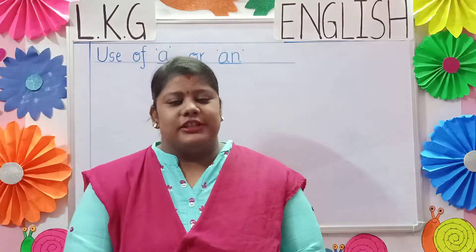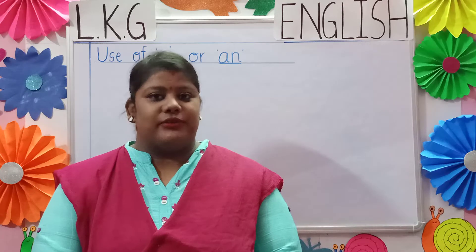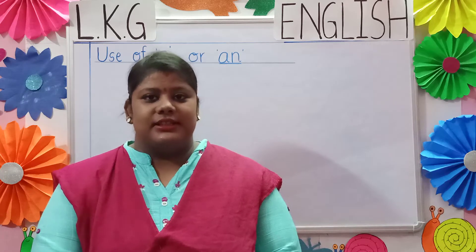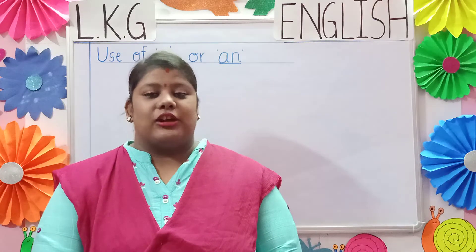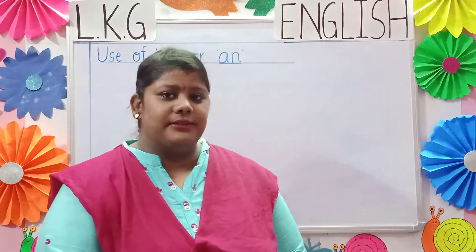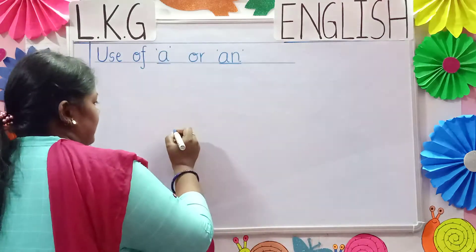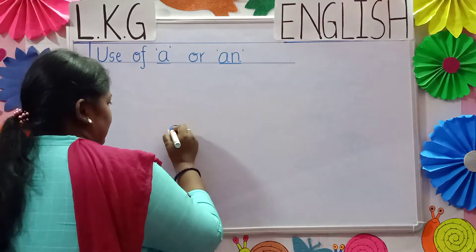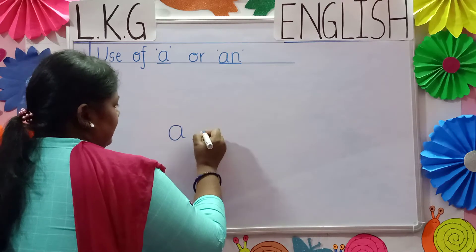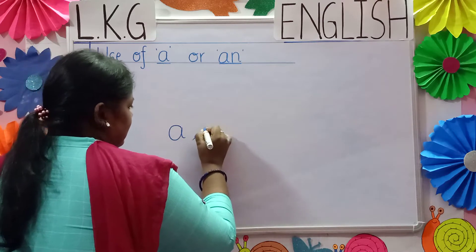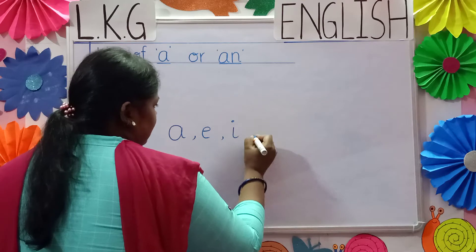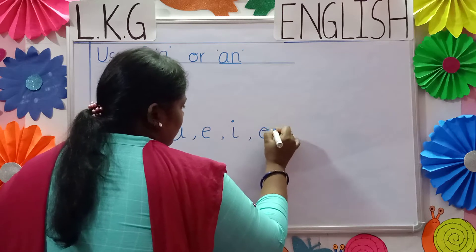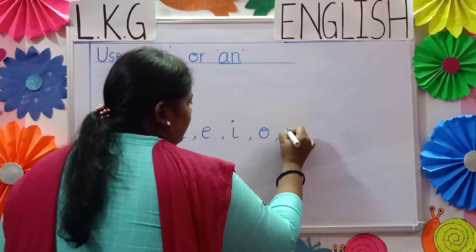Now children, you all have learned about vowels. Yes? Very good. Now name the vowels children. What are they? A, E, I, O, U.